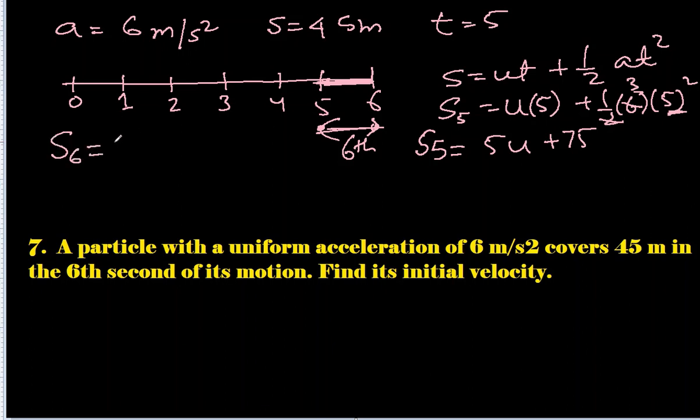Similarly, let's find s₆. After 6 seconds, how much did it travel? u times t which is 6, plus half, acceleration is 6, and time is 6 squared. So s₆ comes out to be 6u, and again we cancel this, 36 times 3 is 108.